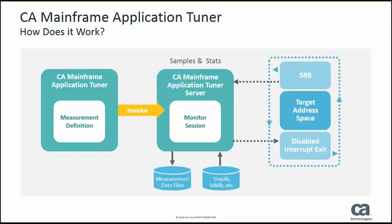How does it work? MAT is installed within the environment. When we decide to measure a particular application or an online region, we invoke MAT. Because MAT is a sampler, it uses a sampling process with disabled interrupts that allows us to integrate and see the actual SRB where the performance is occurring. We monitor that during the MAT session, observing the overall step time, job time, and park time that the application is consuming. We keep that information within our measurement data files. We watch the target address space, sample for a period of time, then create the measurement data files containing the information observed during the sampling process.